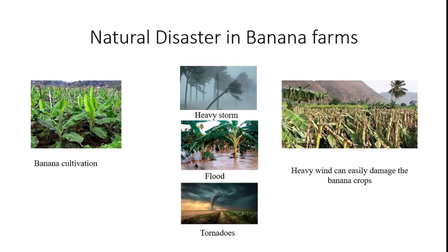Natural disaster is a problem in banana farms. If you consider banana farms, those farms are affected by heavy storms, floods, and tornadoes. These are all natural behaviors available in our atmosphere, and they affect banana cultivation. Heavy wind can easily damage banana crops, so farmers are affected.